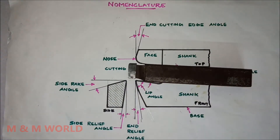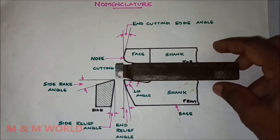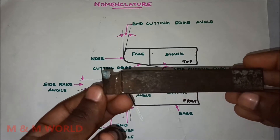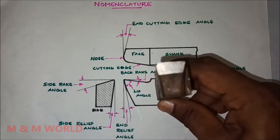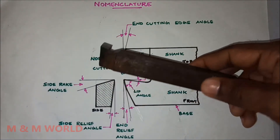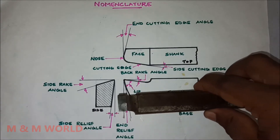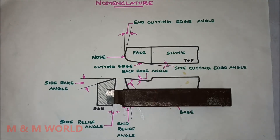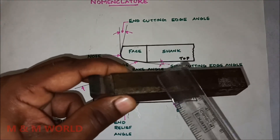This is the cutting tool. This is the top view of the tool, then this is the front view, and this is the side view. The first element is the shank — here you can see the shank. It is the main body of the tool.